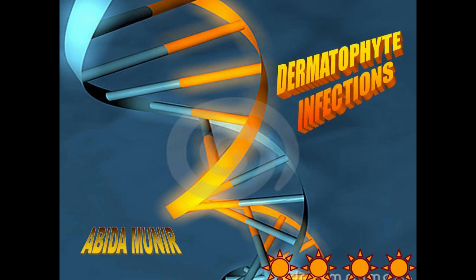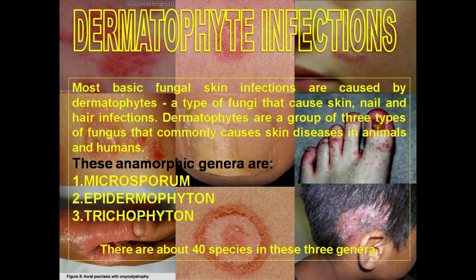Today's video is about dermatophyte infections. Dermatophytes are a type of fungi that cause skin, nail, and hair infections. They are a group of three types of fungus that commonly cause skin diseases in humans and animals. These anamorphic genera are Microsporum, Epidermophyton, and Trichophyton — there are about 40 species in these three genera.